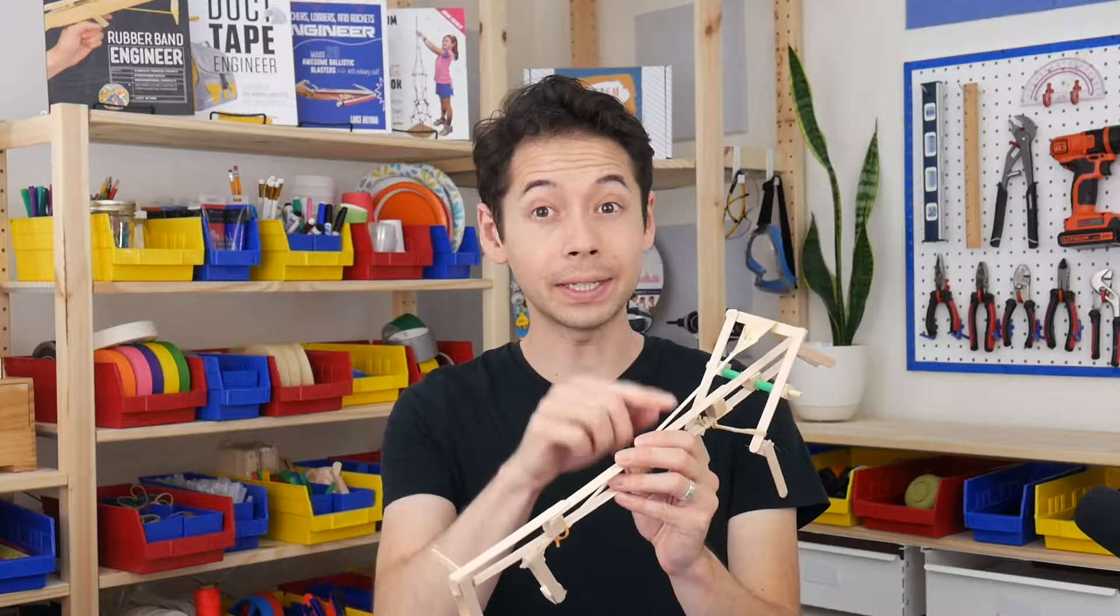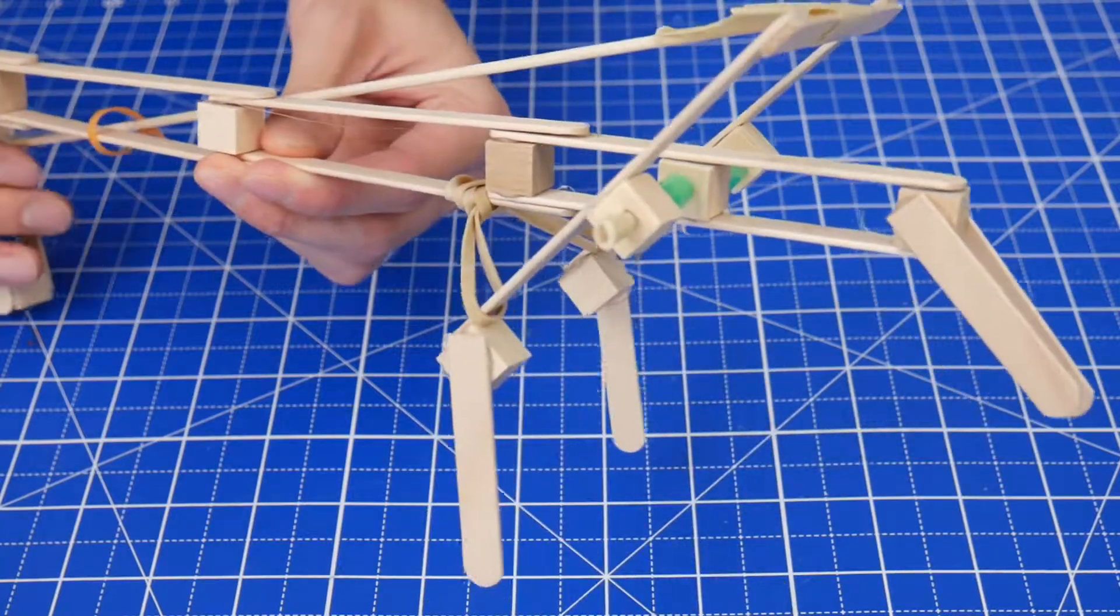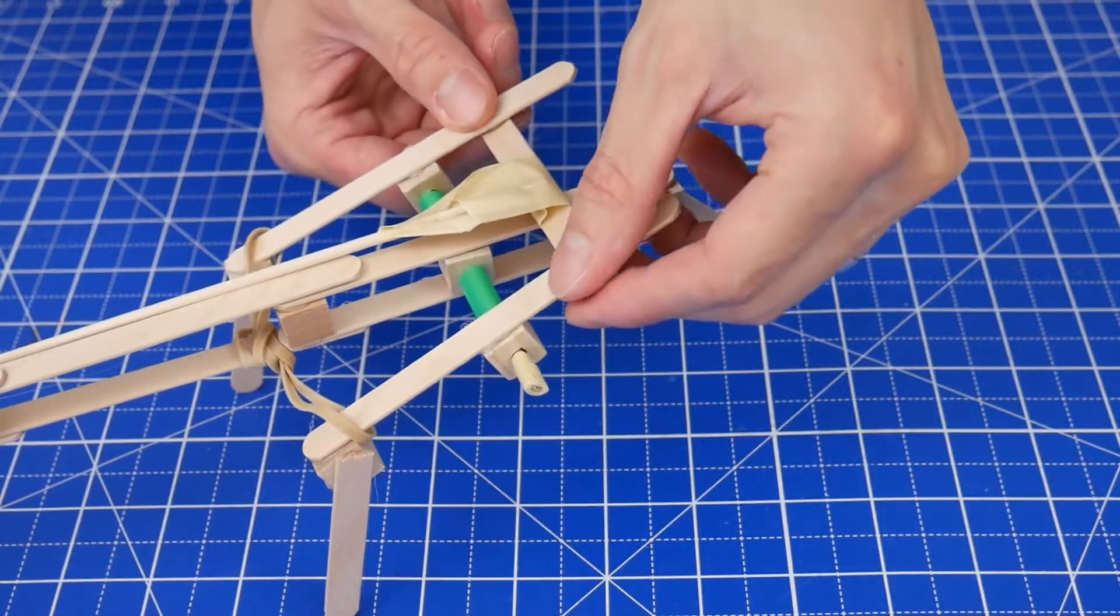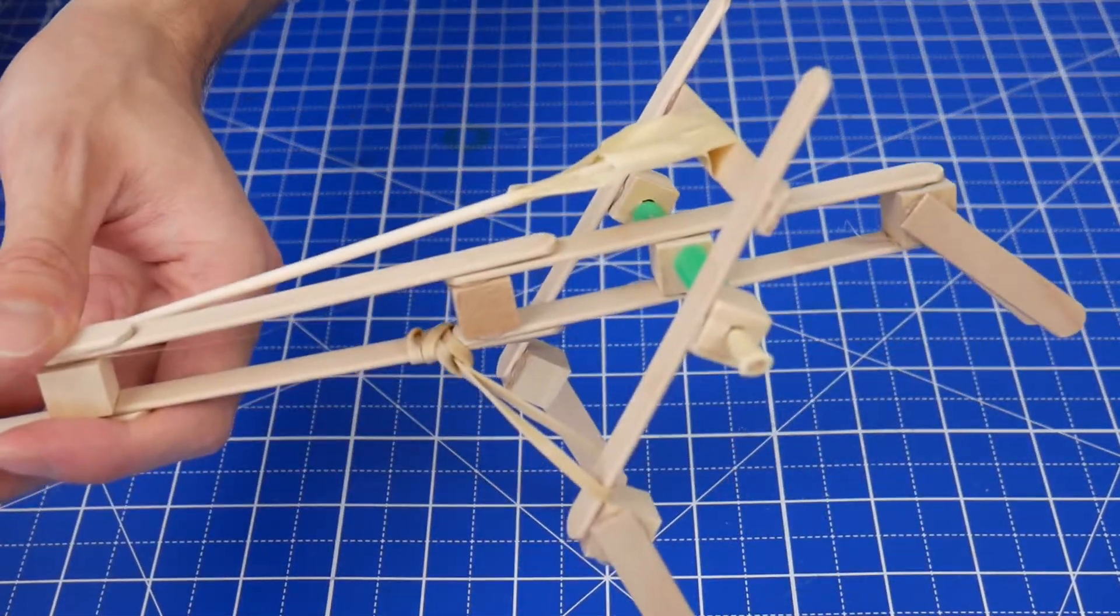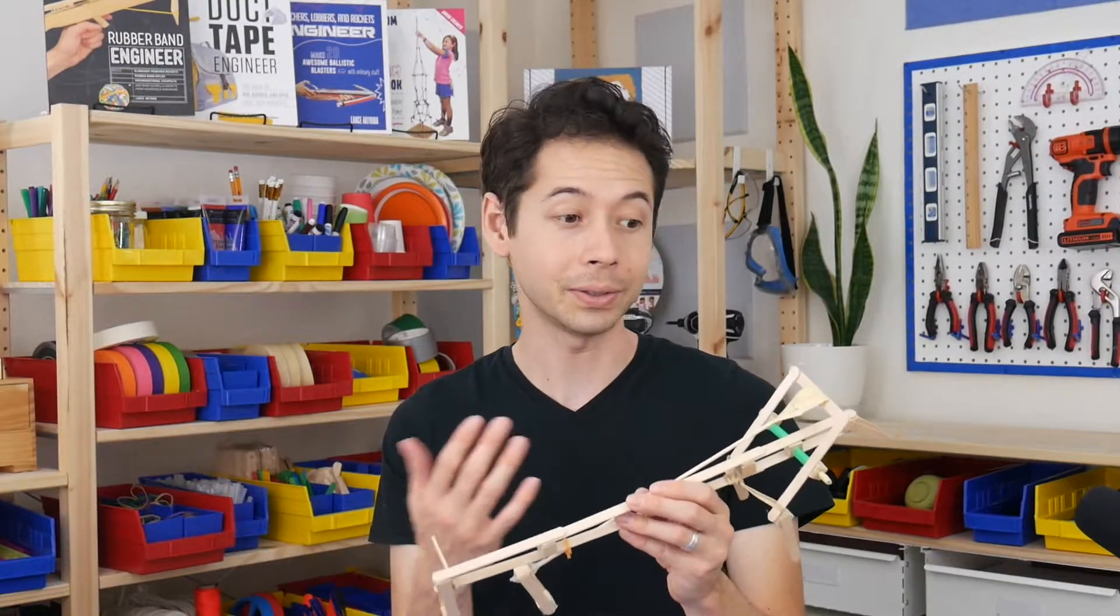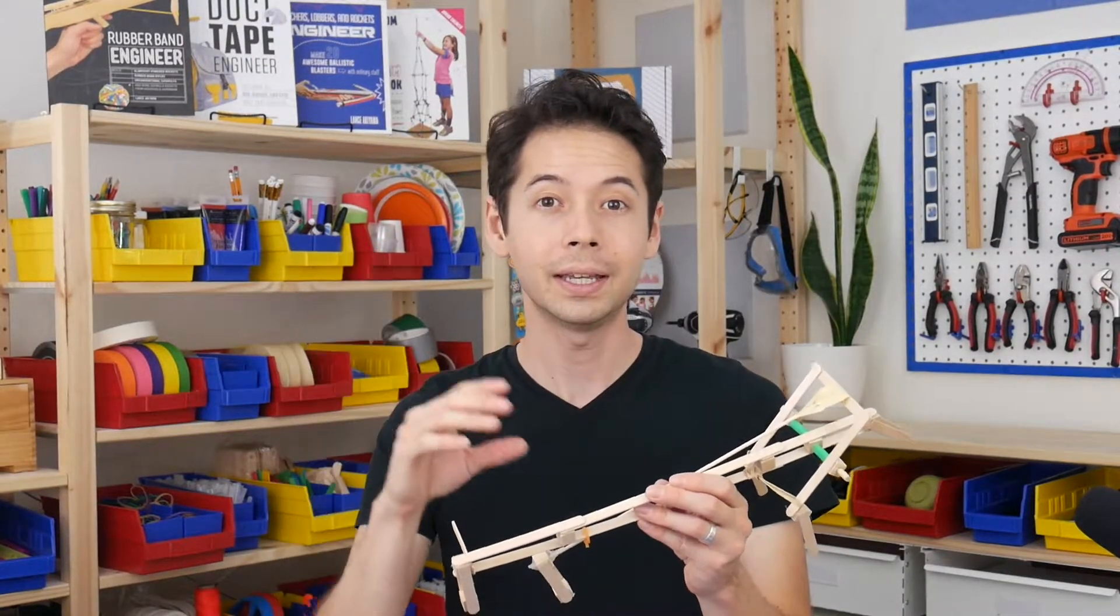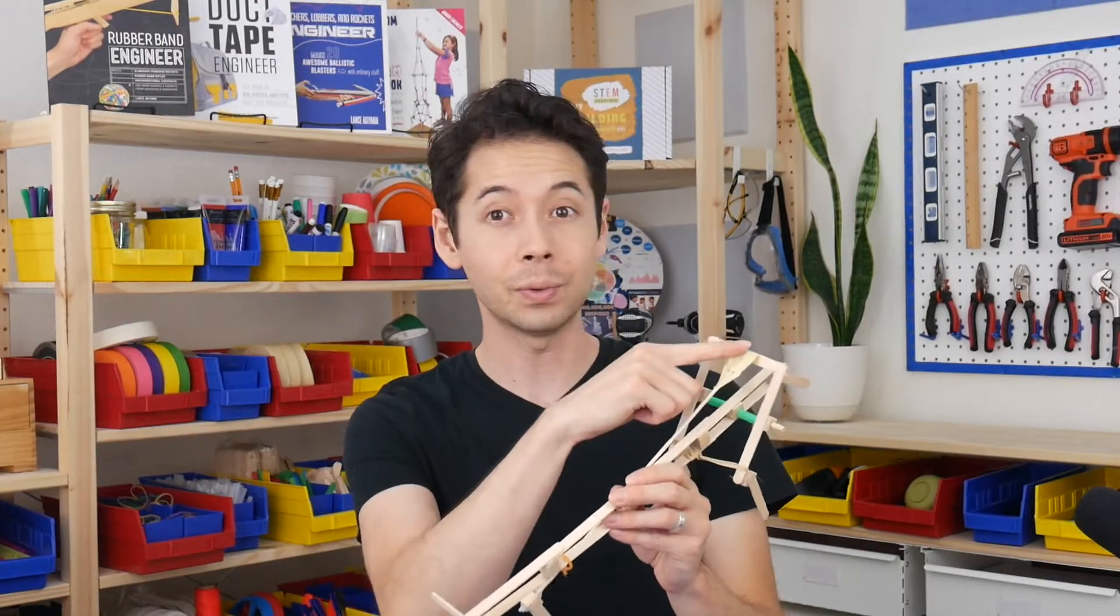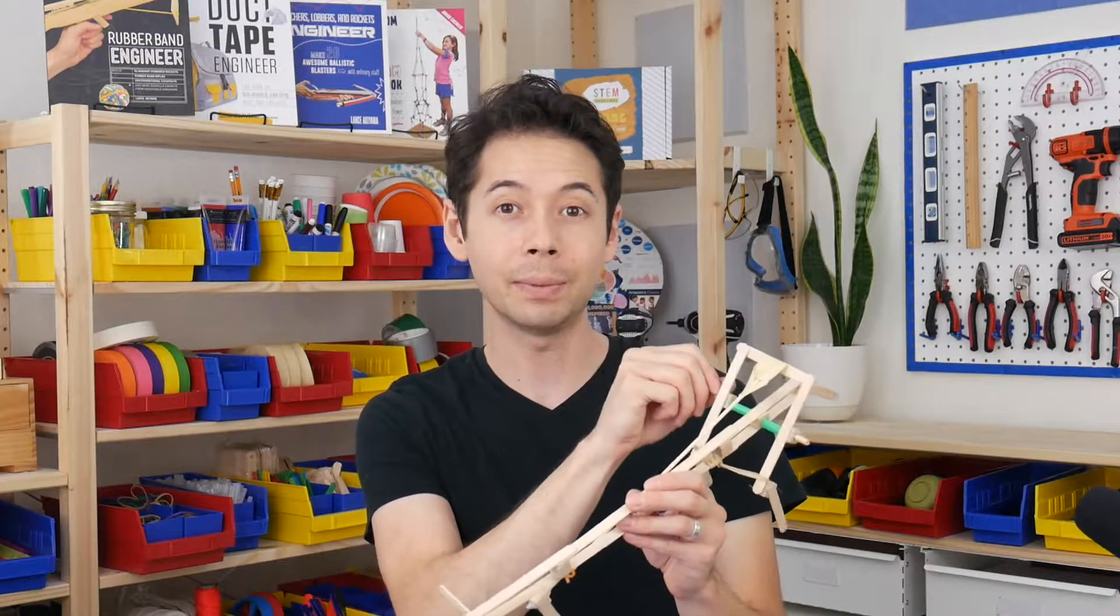And the last thing is where the dowel attaches to the back of the hand. If you move this stick closer to the hinge, you'll achieve a greater range of motion, but the grip won't be as strong because although you'll gain a range of motion, you'll lose some mechanical advantage. So there's definitely a balance to where you connect the dowel to the back of the hand.